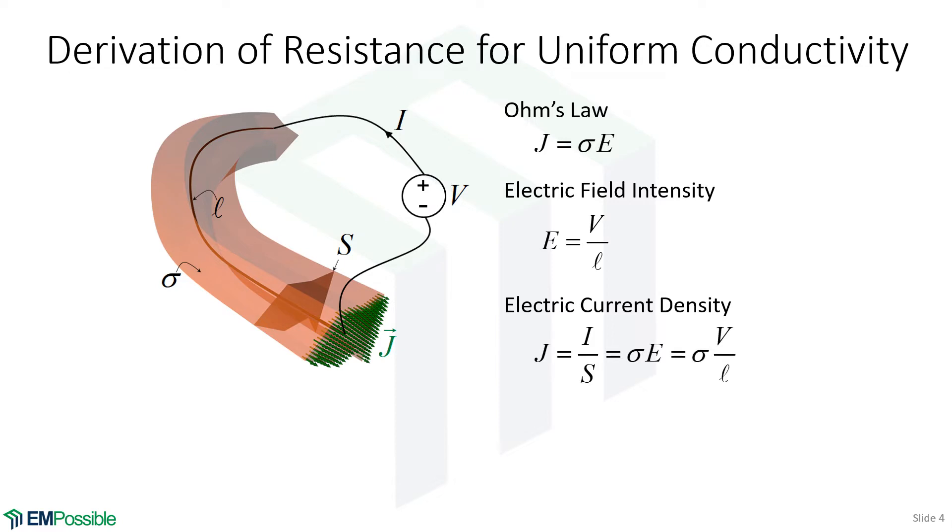Well, E is the applied voltage divided by the length. So we can replace E. Now we can set I over S equal to sigma V over l.